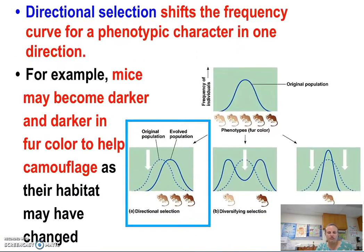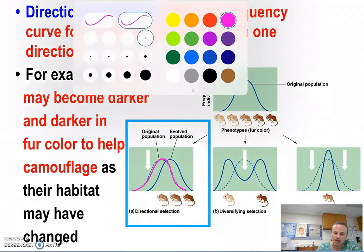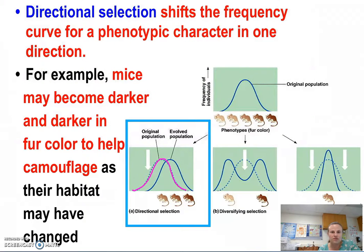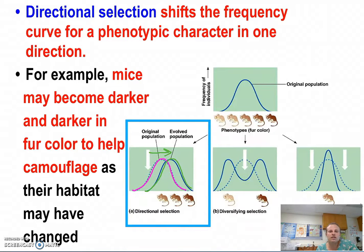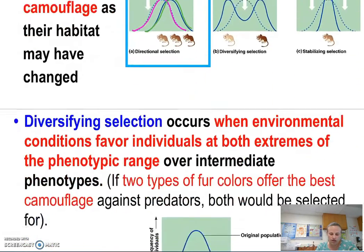Directional selection shifts the frequency curve for a phenotypic characteristic in one direction. Here is the original bell curve representing the distribution of colors of a particular mouse. Mice can become darker — there would be a directional selection shift if being darker is more favorable in that environment. So directional selection shifts the bell curve representing phenotype frequency — in this case, the color of the mouse's fur — in one direction.